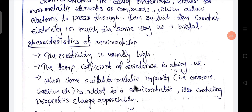When some suitable metallic impurity — that is, arsenic or gallium — is added to a semiconductor, its conducting properties change appreciably. The conductivity of the semiconductor lies between the conductivity of the insulator and the conductivity of the conductor. But when some suitable metallic impurity such as arsenic or gallium is added to the semiconductor, its conductivity property changes accordingly.